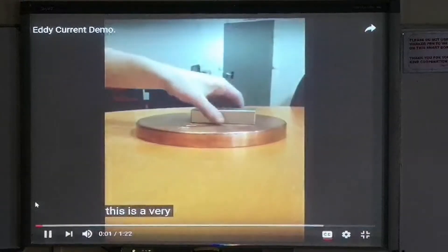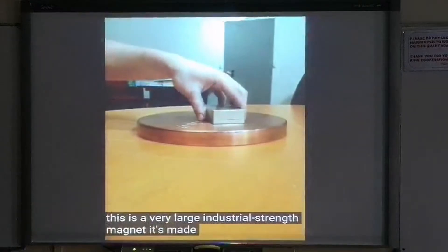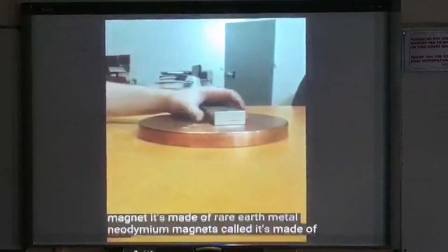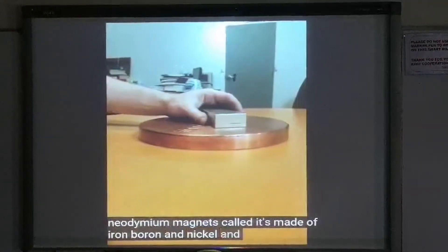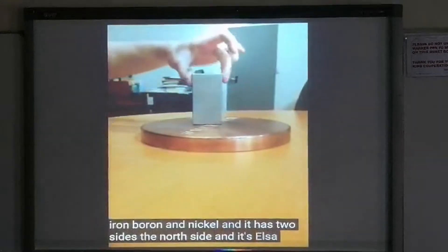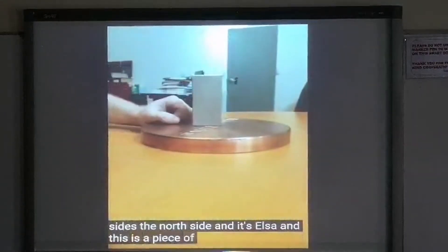This is a very large industrial strength magnet. It's made of rare earth metal, neodymium magnet. It's iron, boron, and nickel. And it has two sides: the north side and the south side. And this is a piece of pure copper.